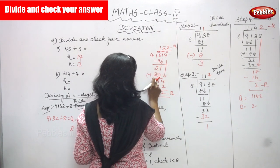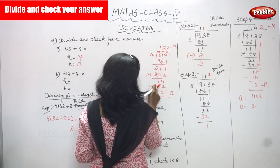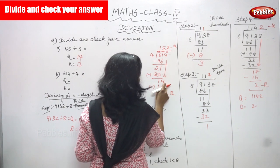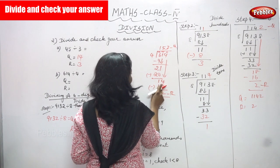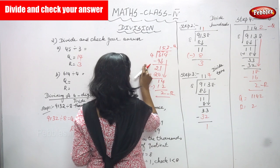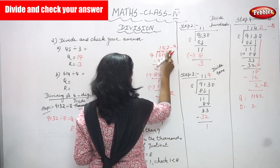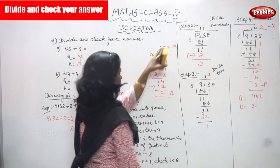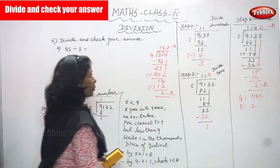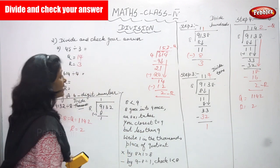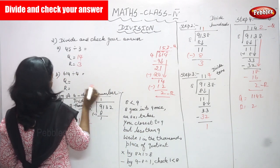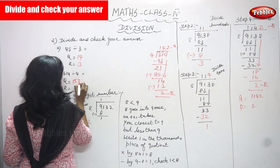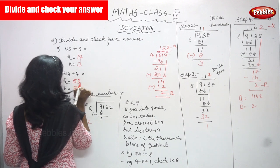21 is divided by 4. 5 fours are 20. 1 minus 0 gives 1. Bring down the 4. So 14 divided by 4: 4 threes are 12. 14 minus 12 gives 2. So the quotient is 153 and the remainder is 2.